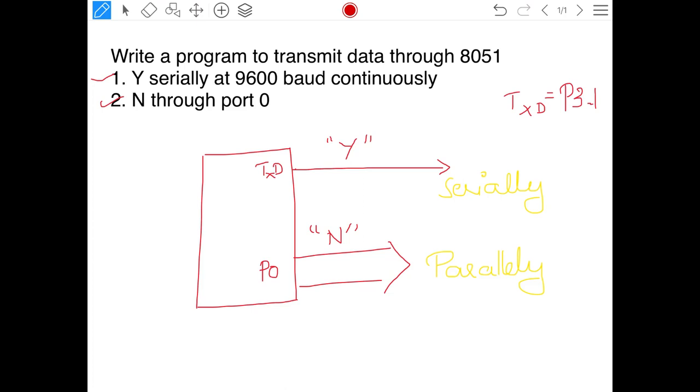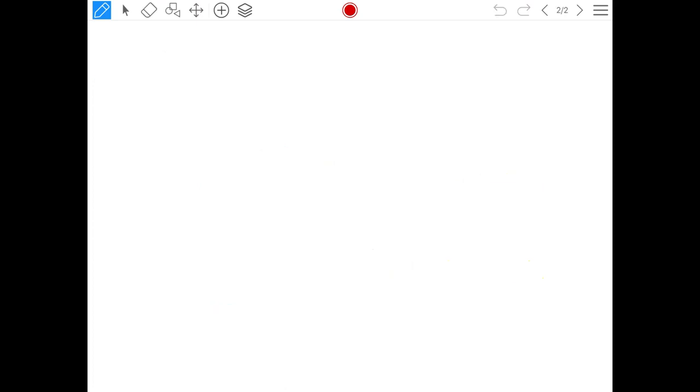Now let us write or do the pre required calculations. The pre required calculations is first thing he has given you a baud rate of 9600. For this we know crystal frequency. This procedure we have already seen it, so I am quickly brushing through it.